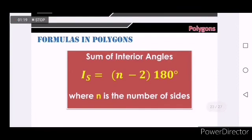If you are looking for the sum of interior angles, the formula is I sub s equals n minus 2 times 180 degrees.